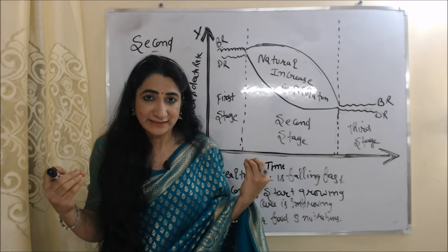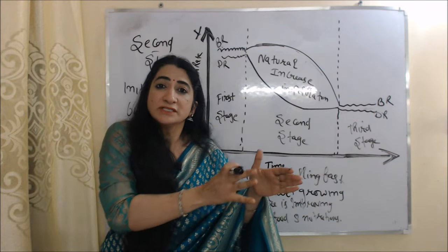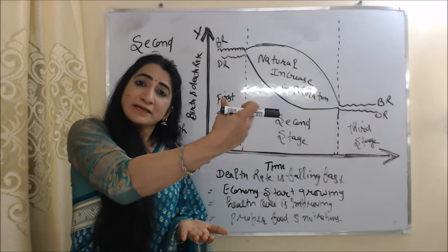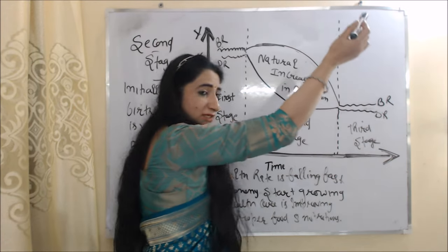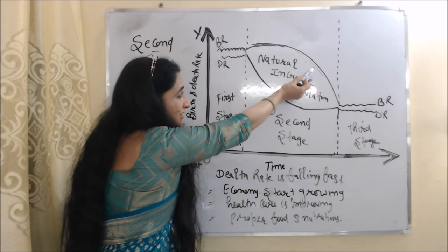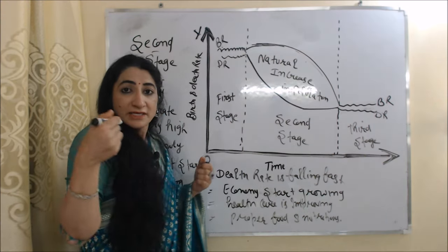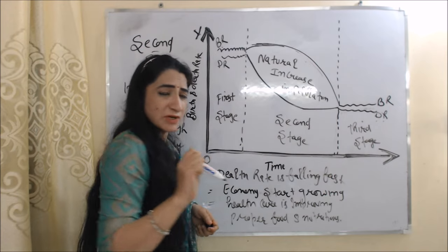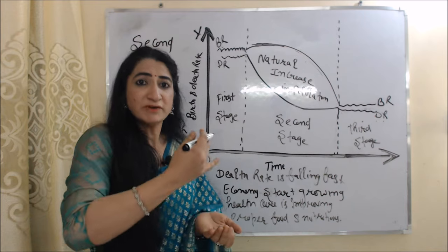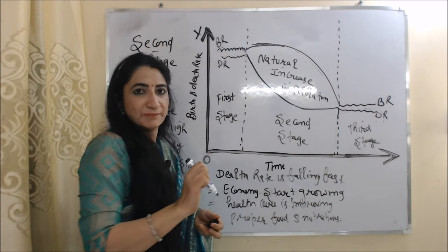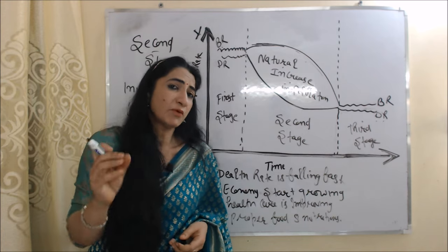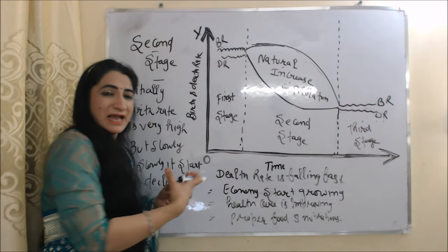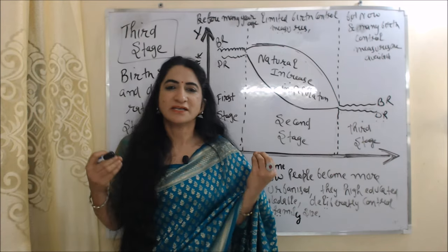During the second stage, initially birth rate is very high but slowly starts declining. You can see in this diagram that the BR curve is initially very high but slowly declines. However, during this stage, death rate is declining very fast — you can see the DR curve declining rapidly. That's why overall birth rate is higher than death rate, and the difference between birth rate and death rate is called natural increase in population. Death rate is declining because the economy is growing, healthcare is improving, and we are getting proper food and nutrition.